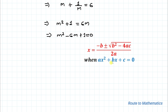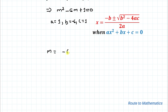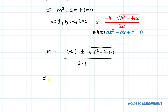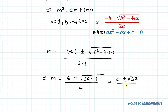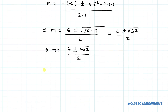The quadratic formula states: when ax² + bx + c = 0, then x = (-b ± √(b² - 4ac)) / 2a. In our equation a = 1, b = -6, c = 1. Applying the formula: m = (6 ± √(36 - 4)) / 2 = (6 ± √32) / 2 = (6 ± 4√2) / 2, which gives m = 3 ± 2√2.